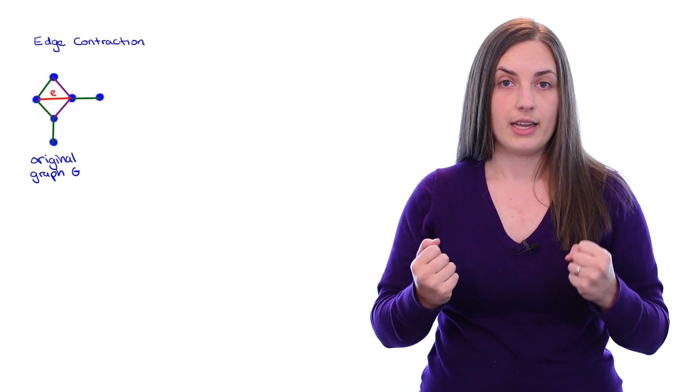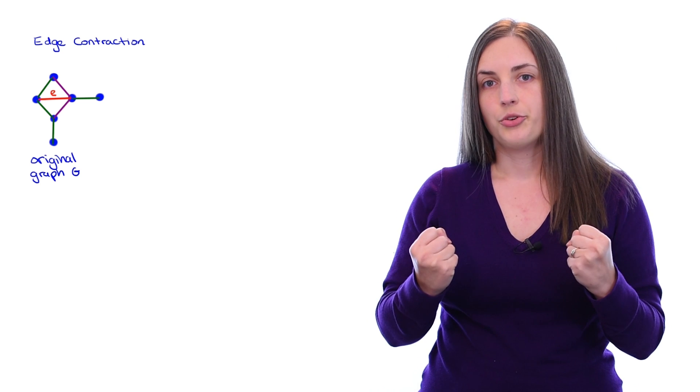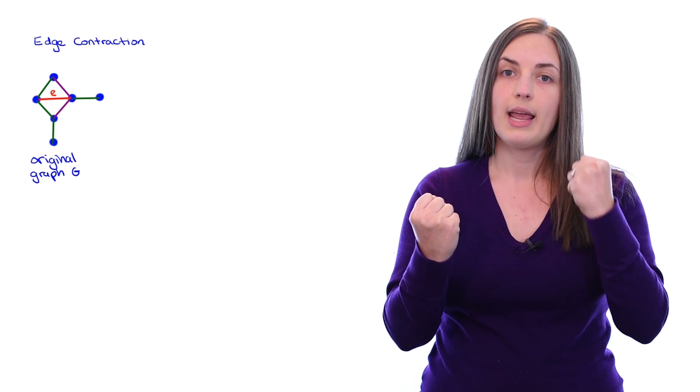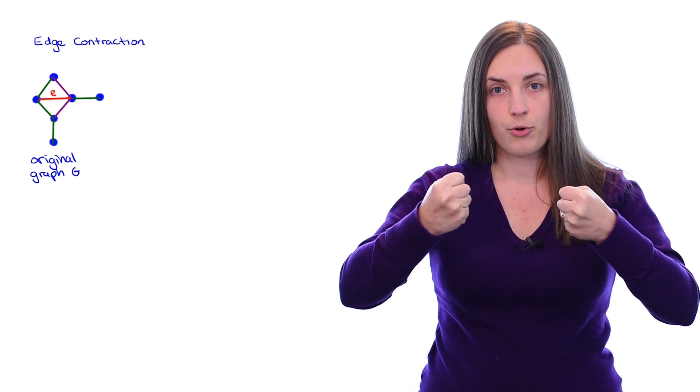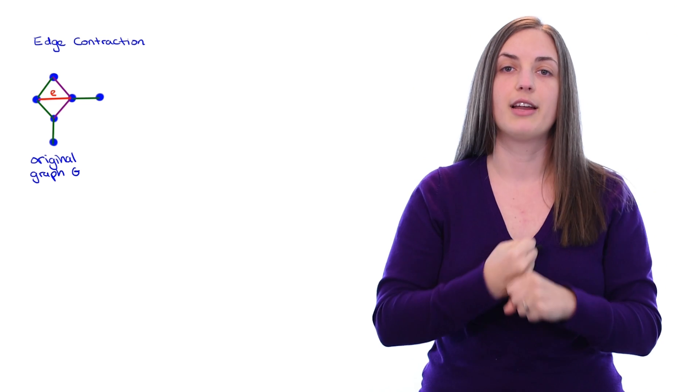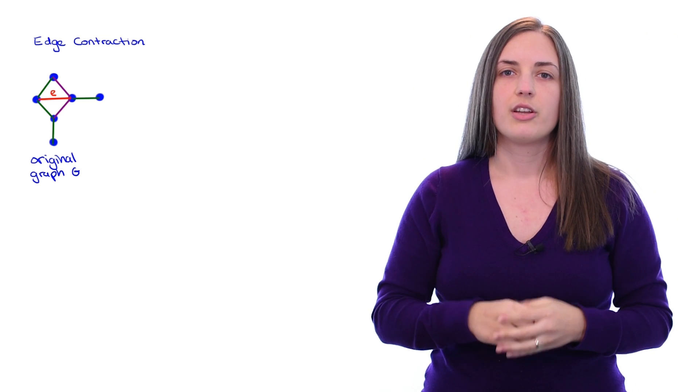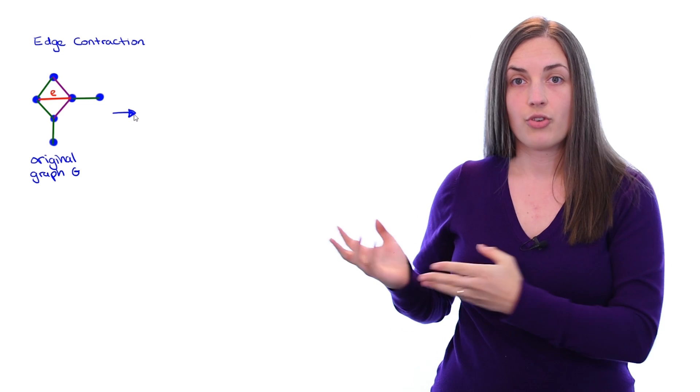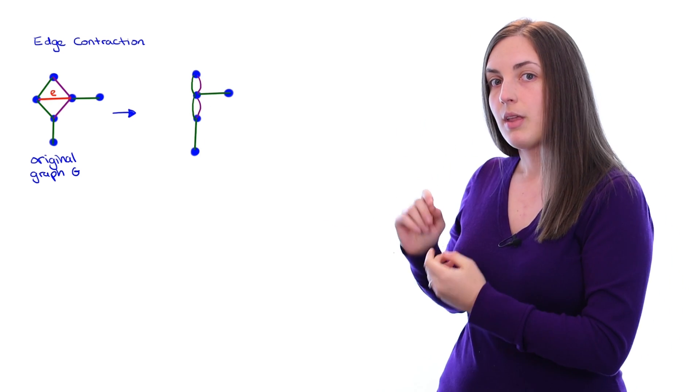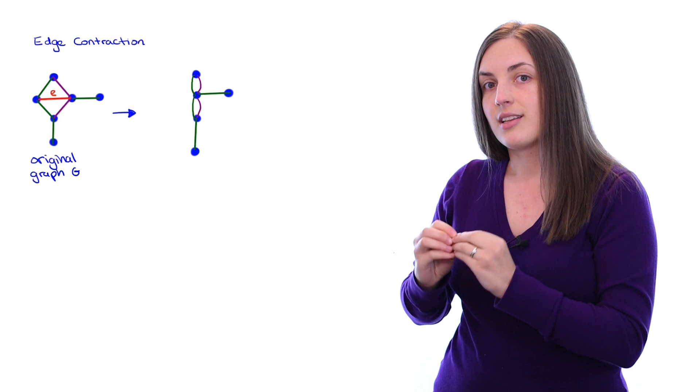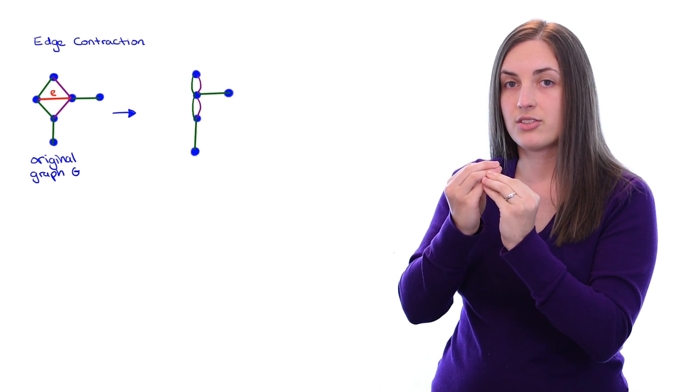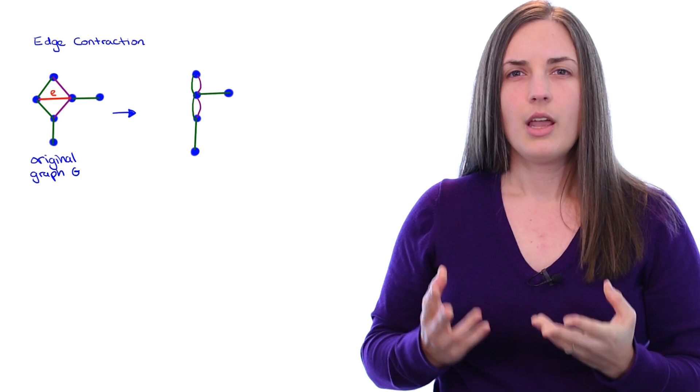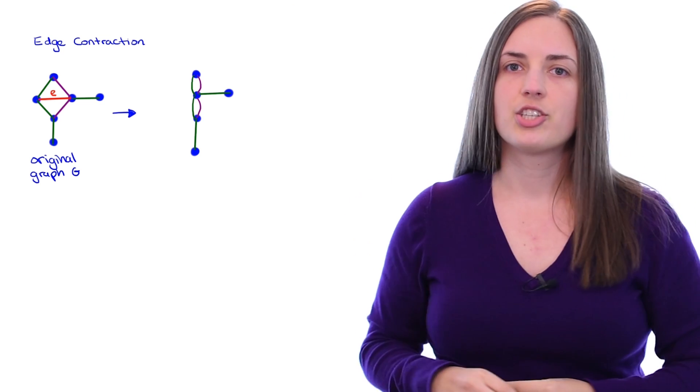However, when we contract the edge E, what we want to do is think about the two end vertices of the edge E as just being forced closer and closer together until they become a brand new identified vertex. That's the intuition. So let's draw what we would get. We get a new graph and notice that the end vertices of edge E have now been identified.